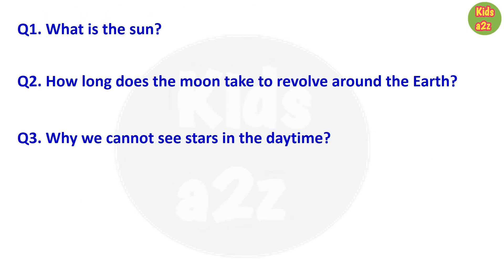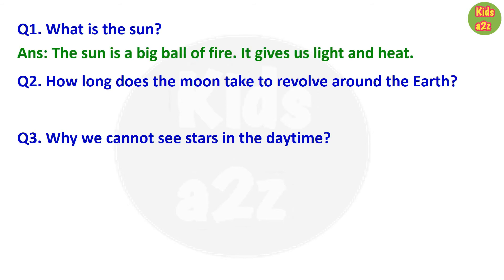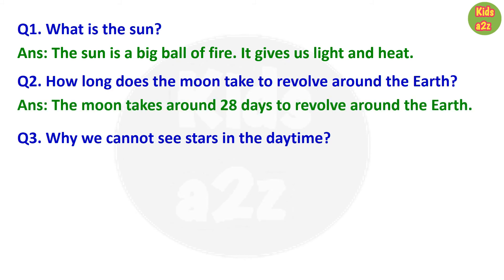Next question: What is the sun? Kids can write: the sun is a big ball of fire; it gives us light and heat. Second question: How long does the moon take to revolve around the earth? The moon takes around 28 days to revolve around the earth.